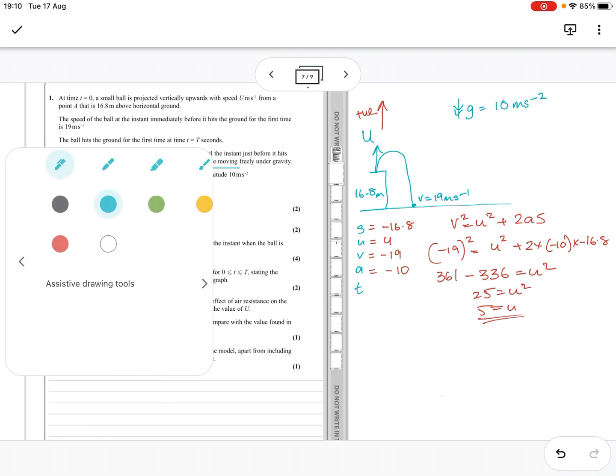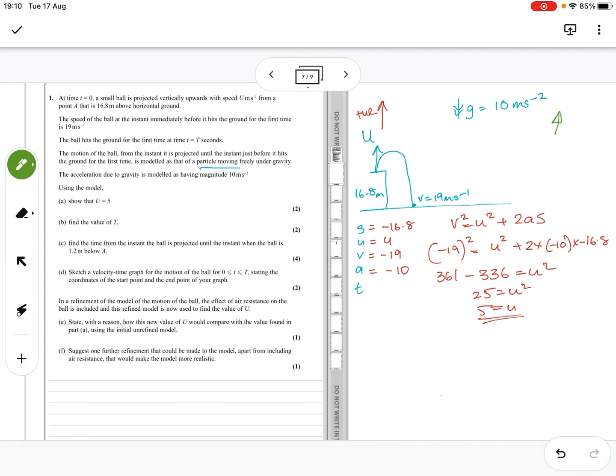Okay, if I went the other way and did it, down being positive, then I've got the distance down is 16.8. I've got my u is still u. I've got my v is 19 because it's positive going downwards, and my a is also positive. So it feels a little bit weird, but my u is going upwards, so that's officially negative. So then I've got 19 squared equals minus u squared plus 2 times 10 times 16.8. Minus u squared is u equals 25 plus u squared, so u equals 5. So it still works. You don't end up with a negative. So that's quite important.